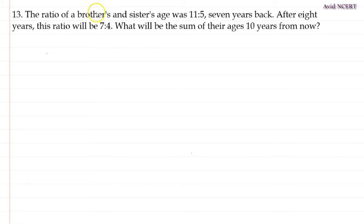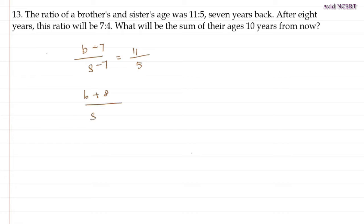First we have to find the age of brother and sister. From this we know that brother to sister's age 7 years back, so (b minus 7) is to (s minus 7) equals 11 by 5. And with the second sentence, we know that (brother plus 8) divided by (sister's age plus 8) equals 7 by 4. With these two equations, we can find brother and sister's age.